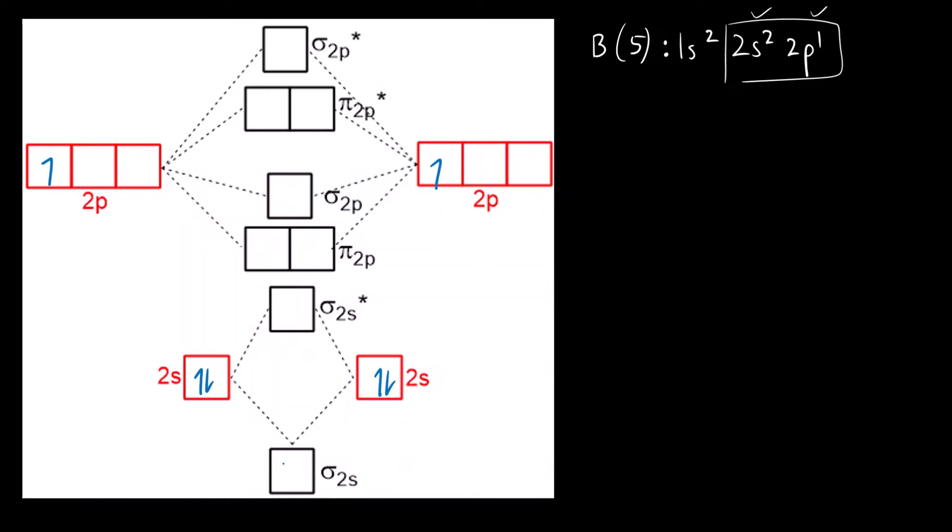Remember, lower energy orbitals are filled first: one, two, three, four in the bonding molecular orbitals. Now we have the anti-bonding molecular orbital. After filling four electrons, we need to fill two more: one and two in the degenerate pi orbitals.